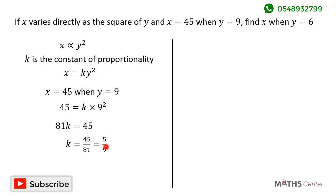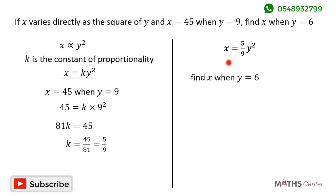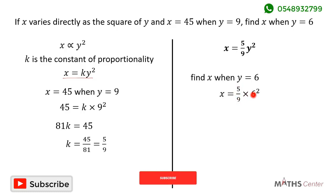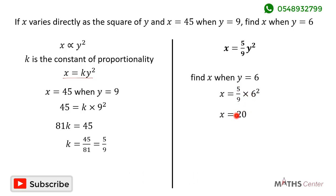So the value of k is 5 divided by 9, and our equation x equals ky squared can be written as x equals 5 divided by 9 times y squared. We can now use this to find the value of x when y is equal to 6. When y equals 6, x is equal to 5 divided by 9 times 6 squared, which gives us 20. So when y equals 6, x equals 20.